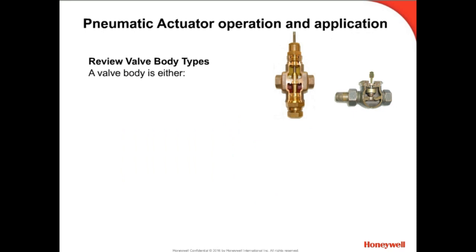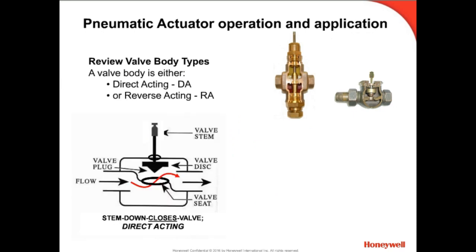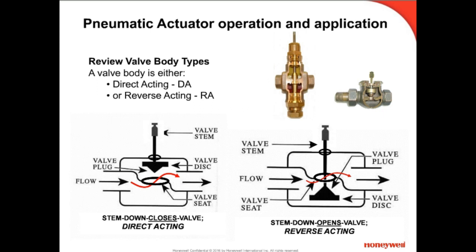Valves are available in several configurations of normally open and normally closed design. It has all to do with the relationship between the actuator and the valve body. Two-way valve bodies are either direct acting or reverse acting. A direct acting valve body closes to flow as the stem is pushed down — this design may also be called a stem-down-closes type of valve. Conversely, a reverse acting valve body opens to flow as the stem is pushed down — this design may also be called a stem-down-opens type of valve. Note there is no return spring in these diagrams, so there is no normally open or normally closed discussion possible at this point.